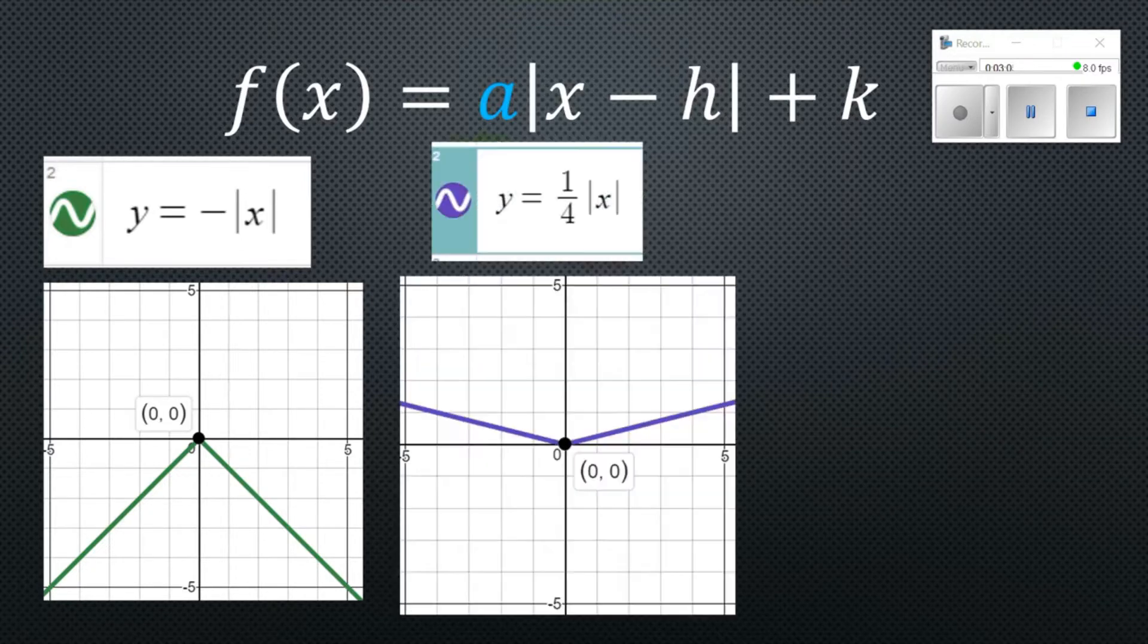The next example, we're going to put a one-fourth in front and that's going to make what I call a wider graph. Vertex doesn't move, it just basically lessens the y's in the table by one-fourth.